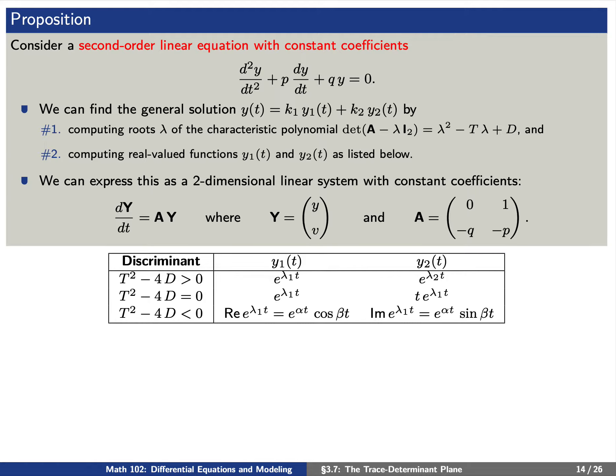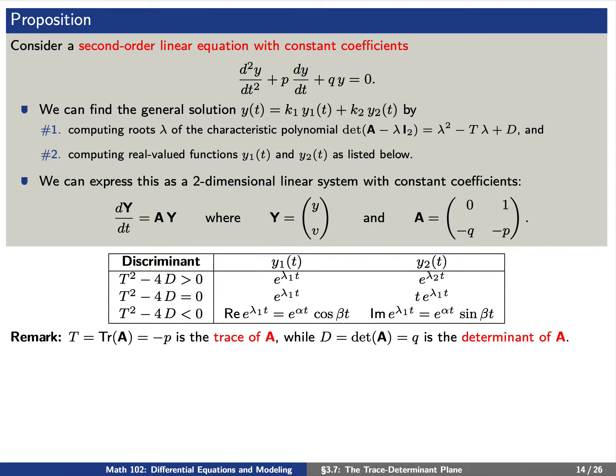We also have a similar proposition for the second-order linear differential equation d²y/dt² + p·dy/dt + q·y = 0. We find the general solution by first computing roots λ of the characteristic polynomial λ² − Tλ + D, and second computing real-valued functions y₁ and y₂ according to the table. Note that capital T is negative p — the trace of matrix A — whereas capital D is q, the determinant of A.